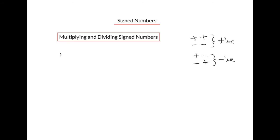For example, let's say we had 3 times negative 5. Remember, if the sign is not shown it's assumed to be positive, so that's a positive 3. Looking at the rule, a positive and a negative are opposite signs, so the result will be negative. So the answer is negative 15.